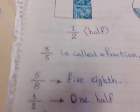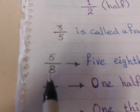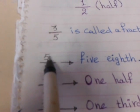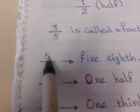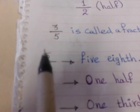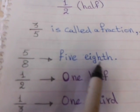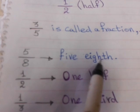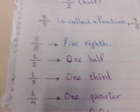We know how to write fractions. But how can we read them? For example, 5 over 8 — how do we read this? We read the numerator first: 5. Then the denominator 8, and we add TH at the end of the word. So it's read as 5 eighths.